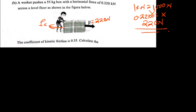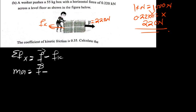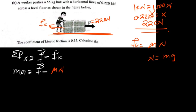The question asks: find the acceleration. Using the summation of forces in the x-direction, we have the applied force minus the friction force, which equals mass times acceleration. Replacing the friction force with mu times the normal force, and replacing the normal force with mg — because the only forces in the y-direction are weight and normal force — we can divide both sides by m. So acceleration equals the applied force minus mu times m times g, all divided by m.